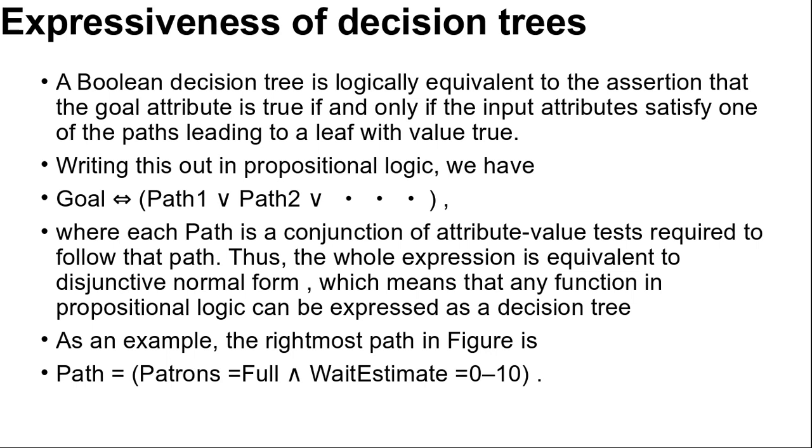Writing this out in propositional logic we have: goal implies path, which double implies path 1 and path 2 and so on.